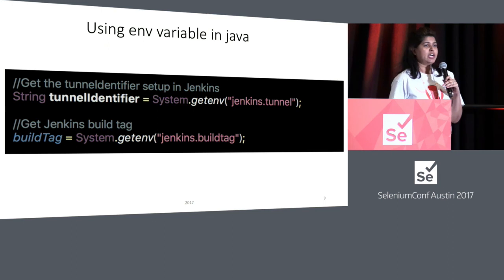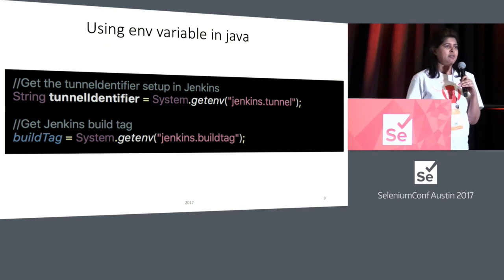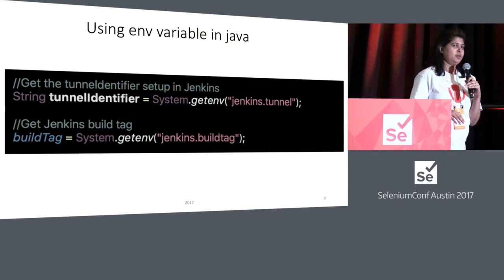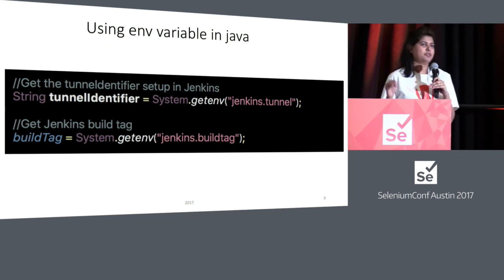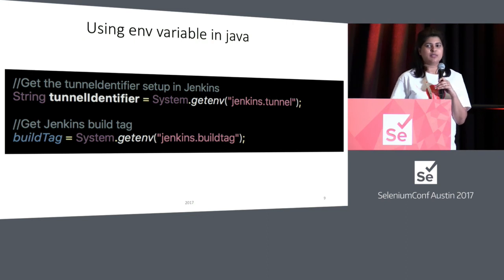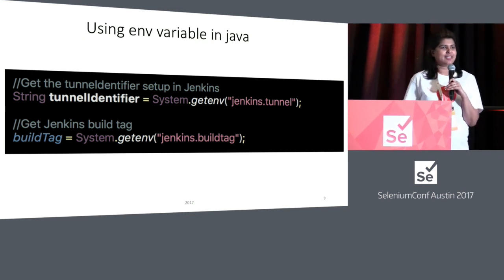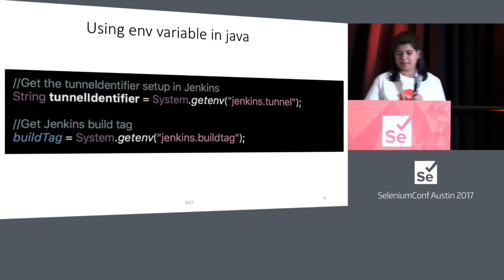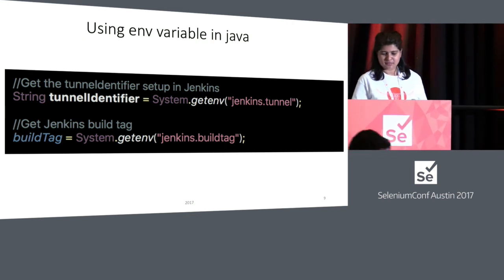Finally, in your Java file, you just retrieve that variable using the actual tag name stored in the POM file. So you are basically not hardcoding any value anywhere — you're passing it from your Jenkins job and retrieving it in your code. That's it about my lightning talk. Thanks!